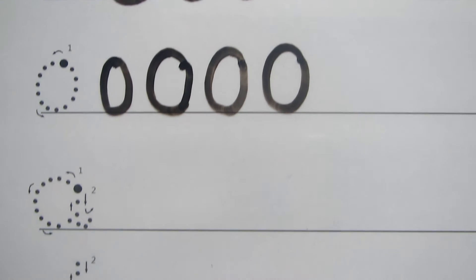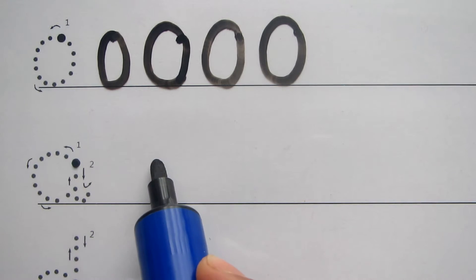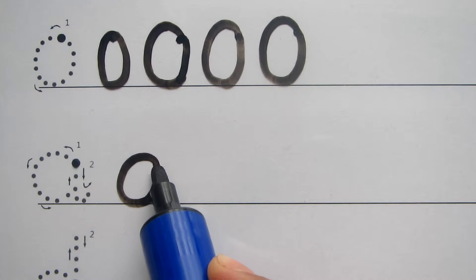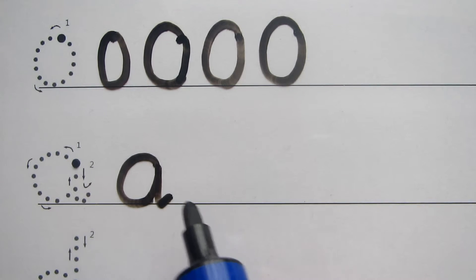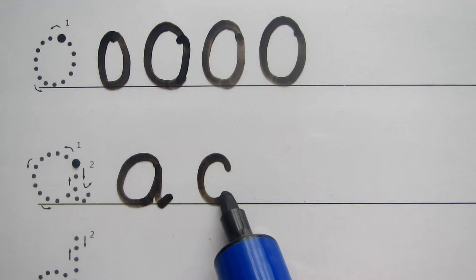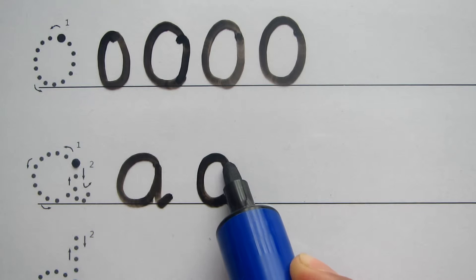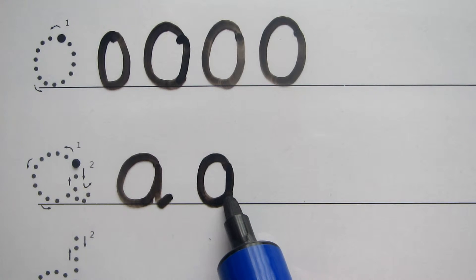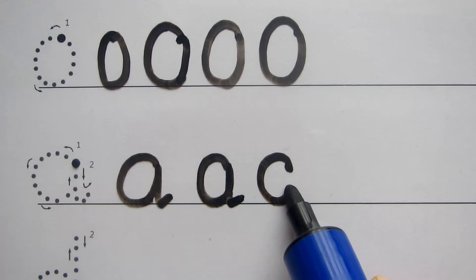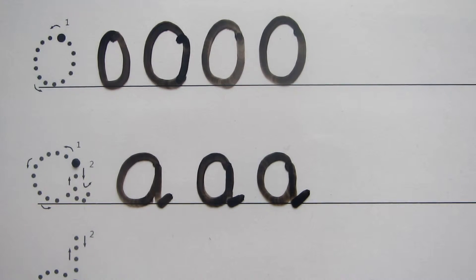The next letter is the letter A. You start there, go up, around, to the line — that's your C-shape. But what we do is head off back up to where we started, stop there, straight down, and a little flick. So: up, around, to the line, back up — that's your C-shape — then straight down to the line and flick. Do not take your pen off. That's your lowercase A.